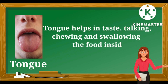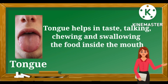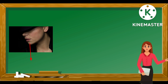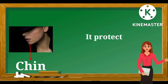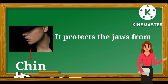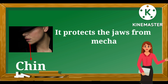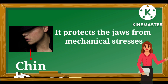This is a tongue — T-O-N-G-U-E. It is located inside the mouth. The tongue helps in taste, talking, chewing, and swallowing food. This is a chin — C-H-I-N — the lower portion of the face lying below the lower lip. It protects the jaws from mechanical stresses.